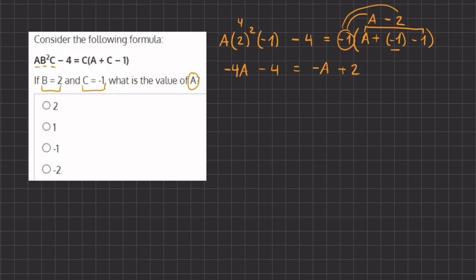So now let's move all of our variables to one side and all of our numbers to the other. So let's add this 4A to both sides and subtract 2 from both sides.